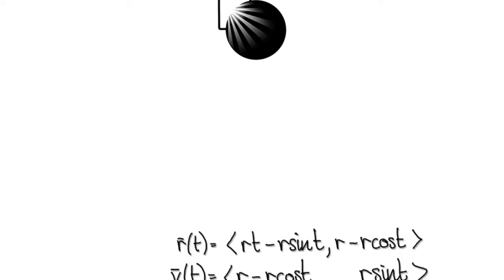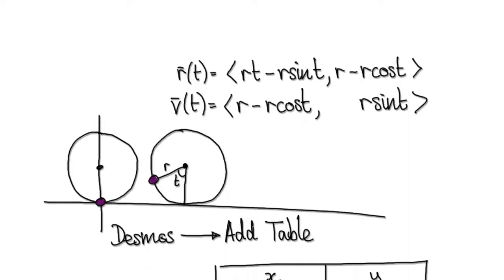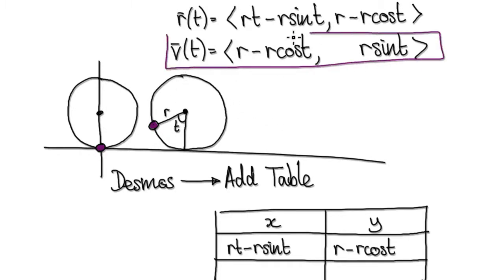In the previous video, we used vectors to draw a cycloid in Desmos. So in this video, we are going to add the velocity vector, and also later on, the acceleration vector. Let me illustrate.